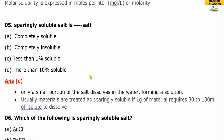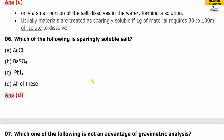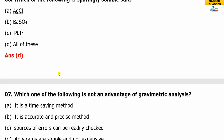Question five: a sparingly soluble salt means only a small portion of the salt dissolves in water — less than one percent. Which of the following is a sparingly soluble salt? Options include AgCl, barium sulfate, lead iodide, and alumina. The answer is D.